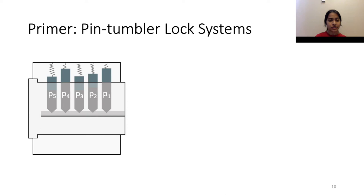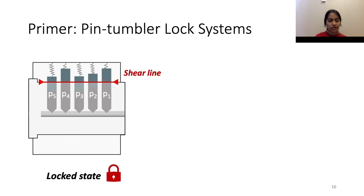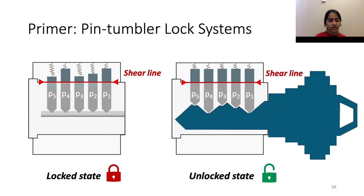Before describing the attack, we go into some essential background on locks. Within each lock are a set of pin stacks, each of which consists of a top pin and a bottom pin. In the locked state, the boundary between the top and the bottom pin does not align with the shear line, hence preventing rotation. However, when a key with the right set of depths is introduced into the lock, the bottom pins are raised such that the pin stacks perfectly align with the shear line, hence unlocking the lock.